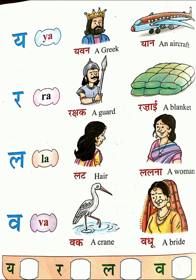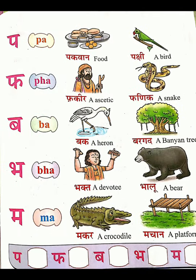Okay children. Once again I will read the words — listen carefully. PA, P-A. 'Pakwan' — food. 'Pakshi' — a bird.